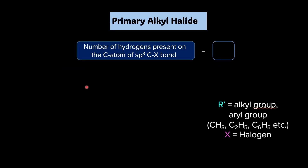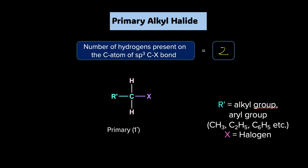Let's begin with the primary alkyl halide. Here X can be any halogen — chlorine, bromine, iodine — and R' can be any alkyl group such as methyl, ethyl, or even an aryl group; it will still be called a primary halide. If we are referring to a primary alkyl halide, let's check the number of hydrogens: one and two. So two hydrogens on that carbon make it a primary alkyl halide.